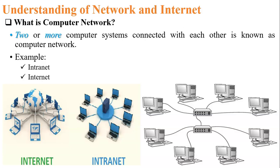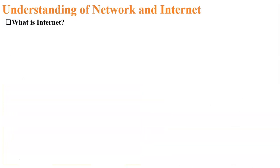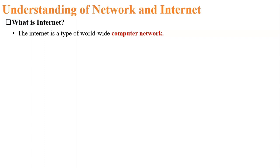What is internet? The internet is a type of worldwide computer network. For example, I am in India and I want to access services from a server located in the USA. There are different networks between India and America connected with each other, and through those different networks I can access services from the server — that is called internet.